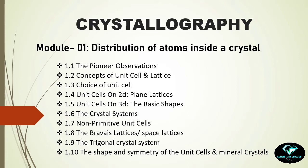The fourth class will be about the two-dimensional arrangement of atoms — the concept of plane lattices and two-dimensional shapes of unit cells. Then we will gradually move to three dimensions: the basic shapes of unit cells in three dimensions. Class six will be very important and interesting because this is where we learn about the seven crystal systems. After that, we will move to non-primitive unit cells and then to the ultimate goal of module one — the space lattice or Bravais lattices, meaning the three-dimensional arrangement of atoms.